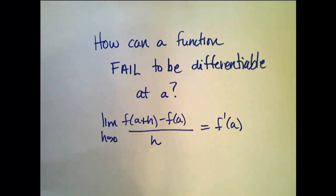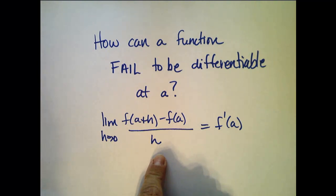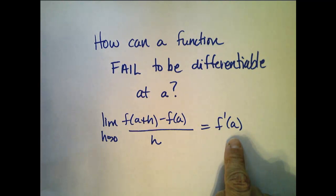Alright, this video is going to be a quick one. In it, we are going to explore how a function can fail to be differentiable at a. So remember the definition of what it means to be differentiable at a. It means that this limit exists: the limit as h goes to 0 of f of a plus h minus f of a over h goes to a finite number. That's what it means to be differentiable at a.